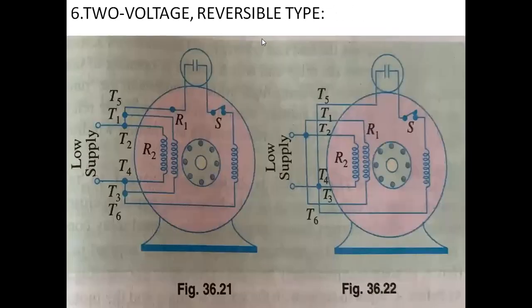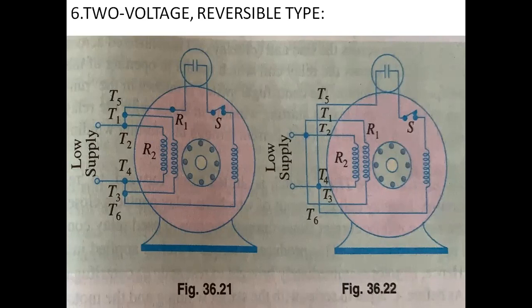Next: two voltage reversible type. In the previous figure we cannot reverse the motor, but here we can. The difference is that for reversing, we have to bring the leads out externally and connect them externally. External reversing is made possible by means of two additional leads brought out from the starting winding.